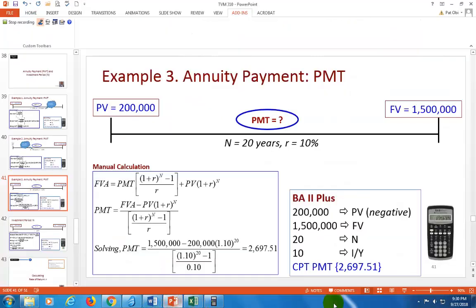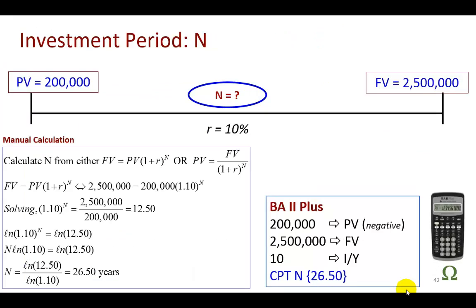And the final problem we have here is one that allows us to calculate for the number of periods. So if you have $200,000 right now and you'd like to have $2.5 million in your investments, and you believe you can earn 10% per annum, how long would it take you to achieve that financial goal?